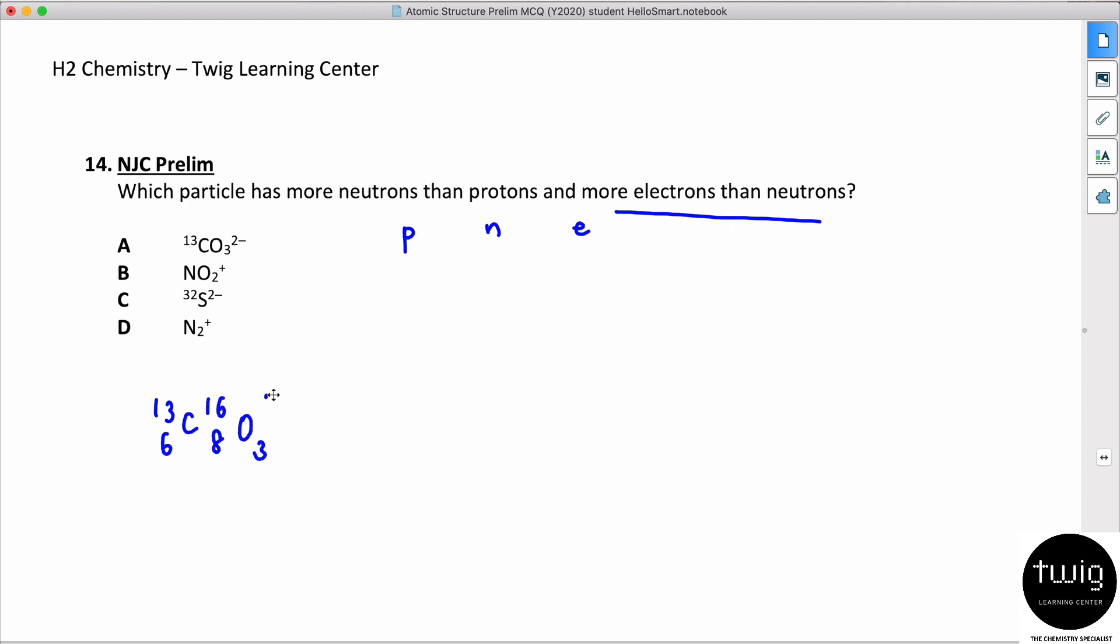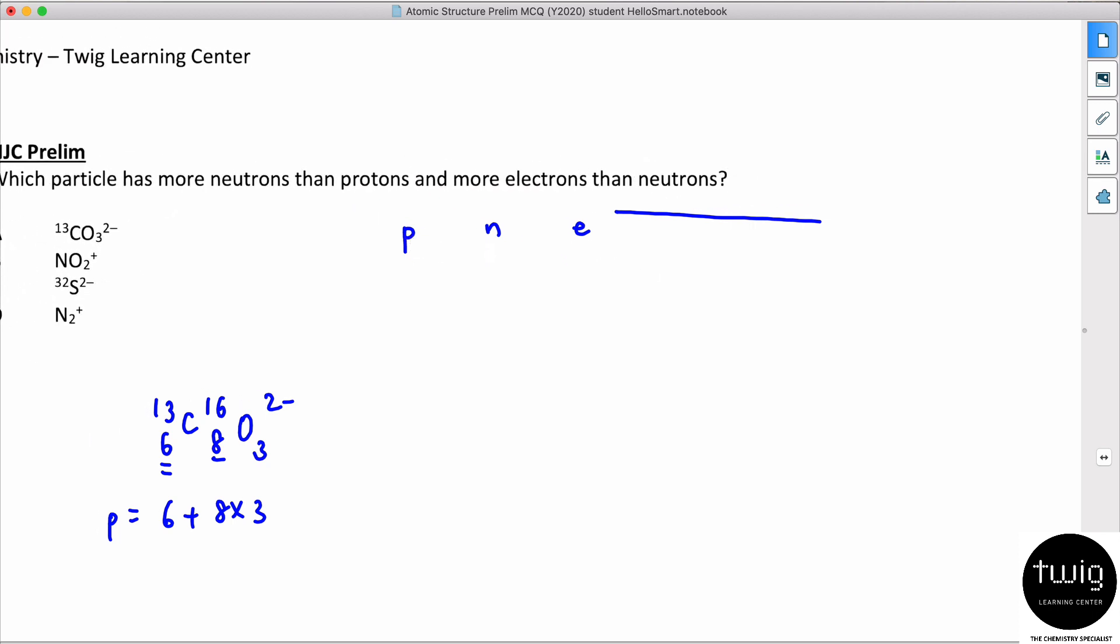Okay, oxygen. So for carbonate, the carbon is number of protons 6 plus 8 times 3. Can you see that? So 8, 16, 24, this is 30.